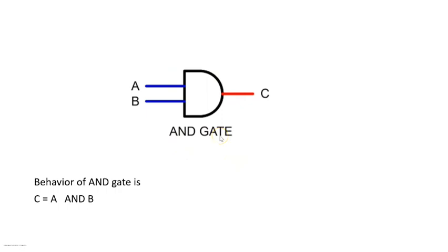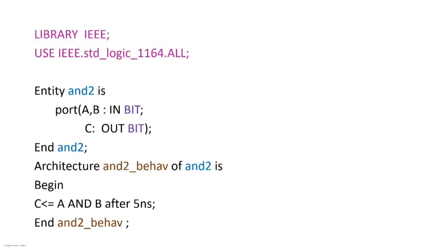The function performed by this AND gate is the AND operation, which means multiplication. So the behavior of this AND gate is: C equals A AND B, where AND is a logical operation meaning multiplication. In simple words, it takes the product of the two inputs A and B and updates variable C with that product. In behavioral modeling, we don't consider the internal structure, connections, or data flow — we only consider how the device is going to behave.